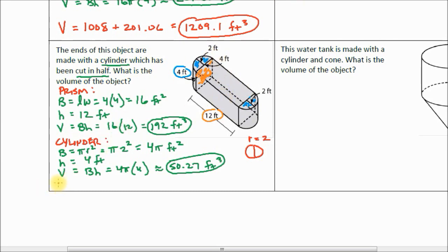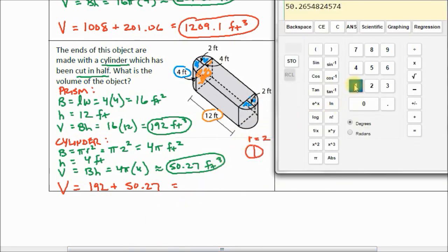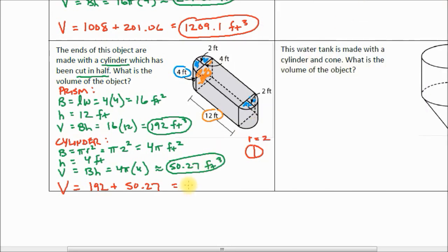And now we can add these together to find the volume of the whole thing. So the volume of the whole thing is 192 plus 50.27. That equals 242.27, I'm going to round that to 242.3 feet cubed. That's the entire volume of this composite object. We'll do the next two questions in the next video.